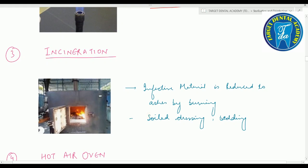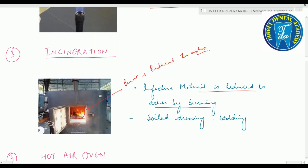Third method of dry heat sterilization is incineration. Infective material is reduced to ashes by burning. Examples include soiled dressings and beddings — all infective material is reduced to ashes by the burning process.